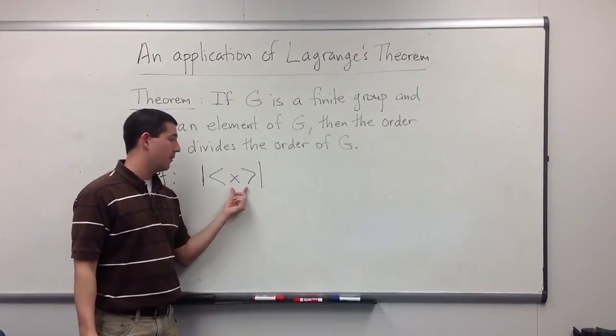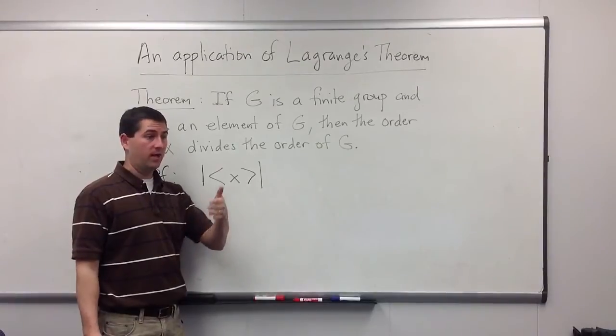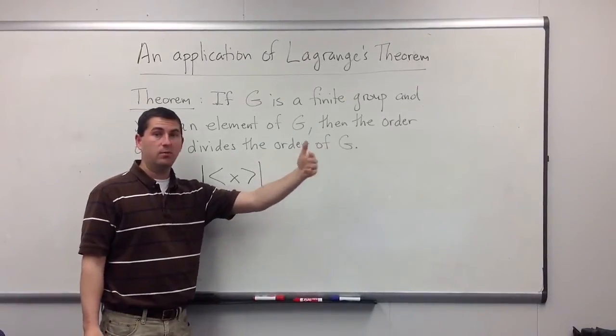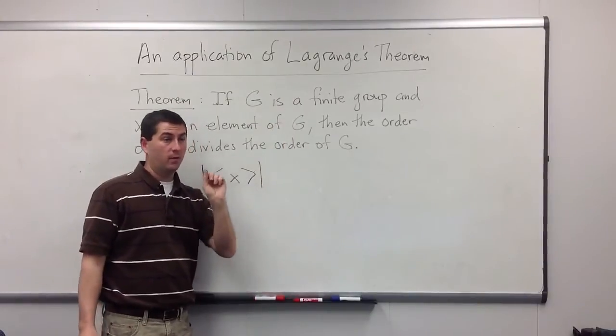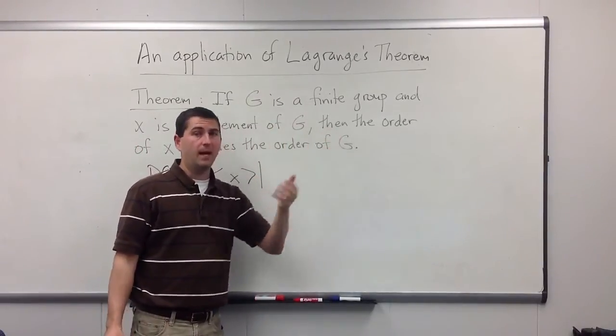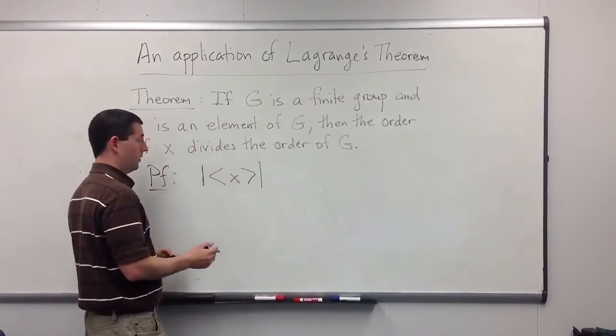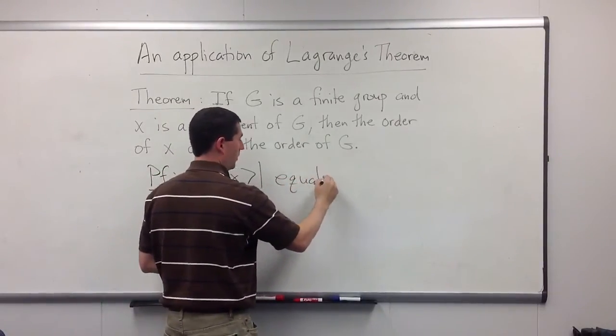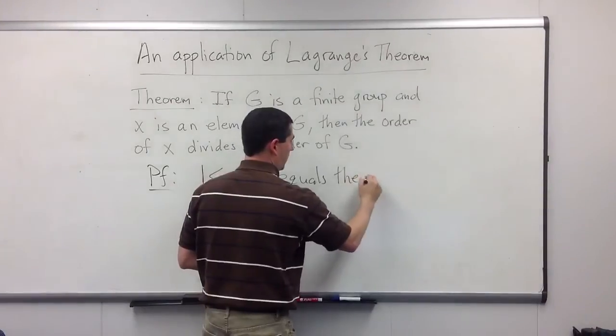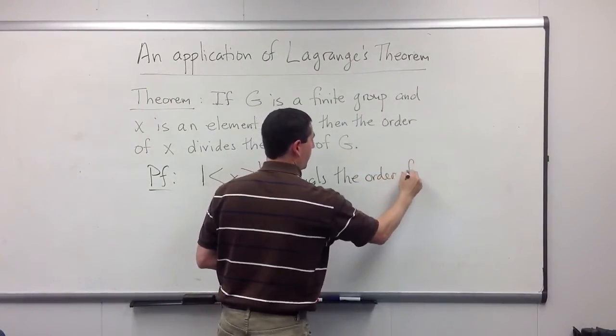You're going to have E, X, X squared, X cubed, so forth, up to X to the order of X minus 1. If you went X to the order of X, well, you'd get back E. So this number actually equals the order of X.